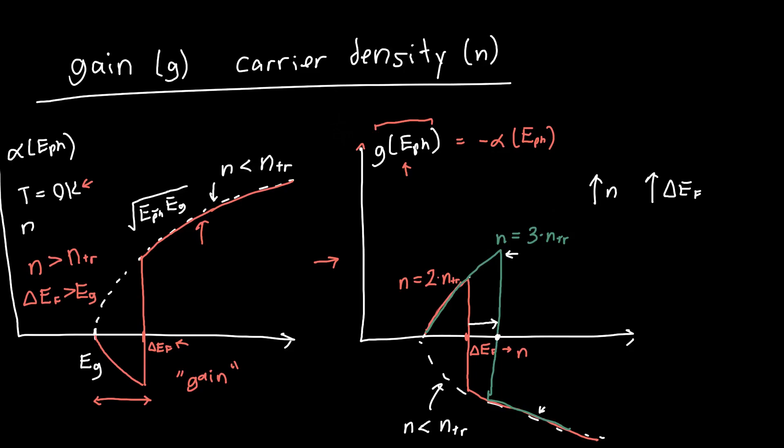Now if I'm a photonics engineer, I'm probably going to be most interested in this peak value, so let's call this the peak gain. Because I want my laser to operate as efficiently as possible, so I want to operate at the energy that corresponds to the highest possible gain for a given material. So this would be the peak gain for carrier density of, for example, three times the transparency carrier density. This would be the peak gain for two times the transparency carrier density.